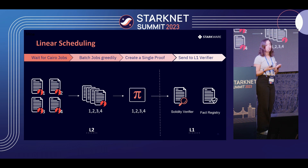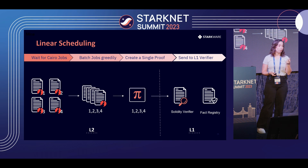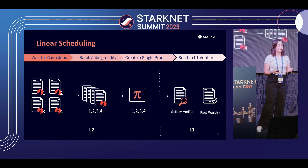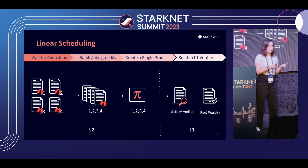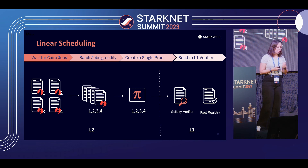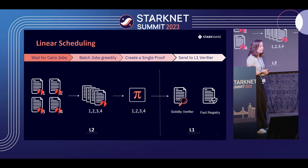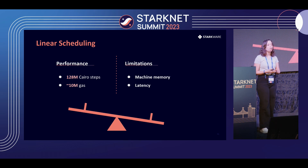The proof then went to the Solidity Verifier on-chain to be verified. And eventually, for each of the original jobs, we wrote a unique identifier on Layer 1 that signals to the world — that's the way the verifier signals — that the original jobs were verified correctly. You can think of it as the hash of the program with its output. This was pretty good. We operated like this for two years and the system did well — we could fit up to 128 million Cairo steps on a single proof, and this cost us 10 million gas.